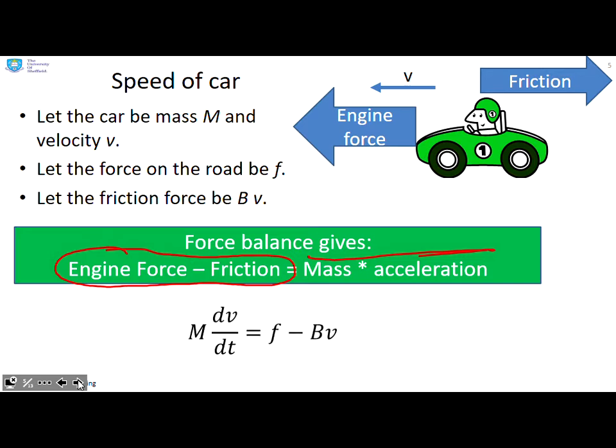Now we can write that down as an equation very quickly. So the engine force is f, the friction is bv and mass times acceleration is m dv/dt. And so you see, just by writing down the English sentence and doing the force balance, we've derived the model.